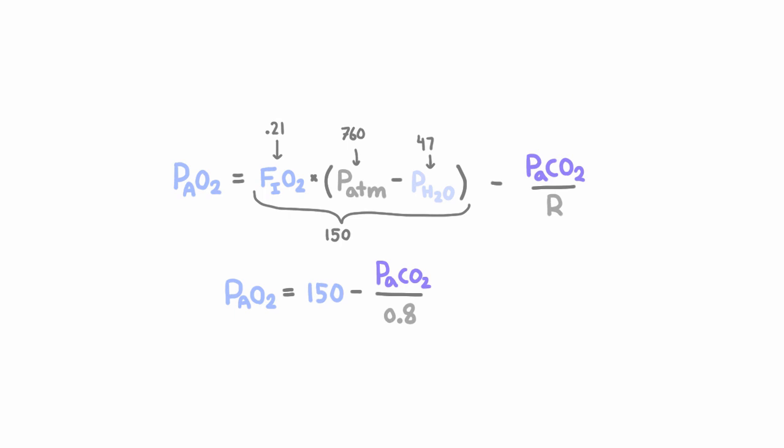And dividing by 0.8 is actually the same as multiplying by 1.25, so sometimes people prefer to write it like this since it can be easier to plug numbers in.